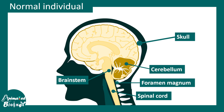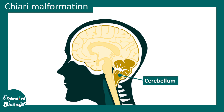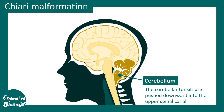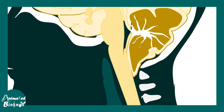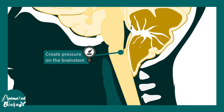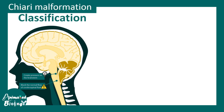In the case of Chiari malformation, the cerebellum descends down — the cerebellar tonsil actually descends down through the foramen of magnum to the upper spinal canal. If we zoom into this situation, we can understand the descended cerebellum might create extra pressure on the brain stem, as well as there could be blockage of the normal cerebrospinal fluid flow that might result in obstructive hydrocephalus.